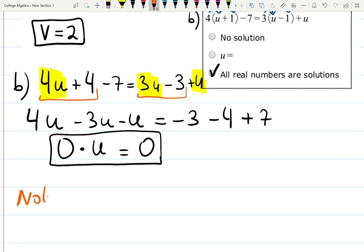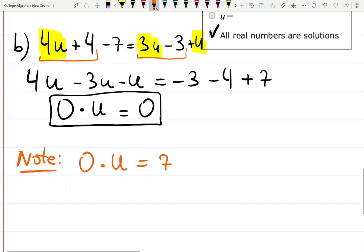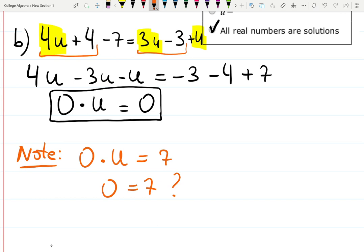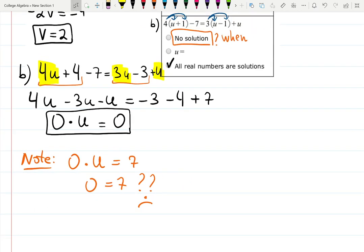Note. Do you know when the answer would be no solution? When at the very end, you will have nonsense. So for example, you still have 0 times u, but the right-hand side is not 0. For example, it was 7. Then it will be 0 equals 7. And you ask yourself, does this make sense? If the answer is nope, it doesn't make sense, then there's no solutions. So that's how you know. No solutions. If at the very end, you just have some kind of nonsense, or basically not a right equality, because 0 does not equal 7, no matter what u is over there.